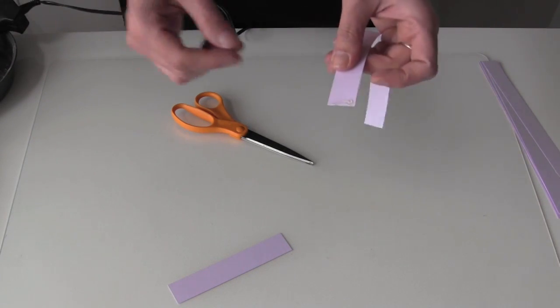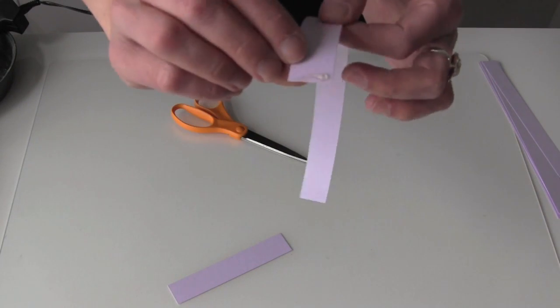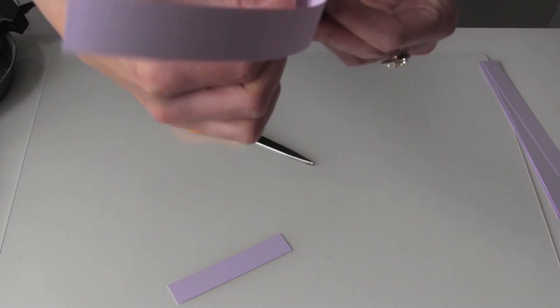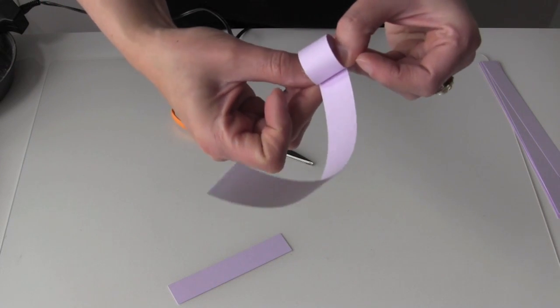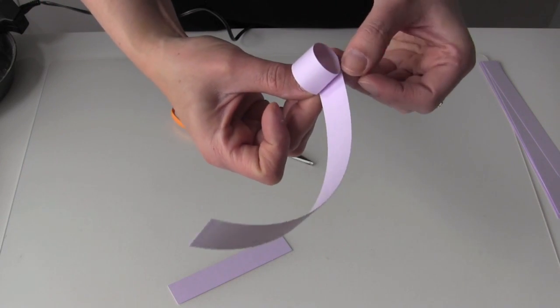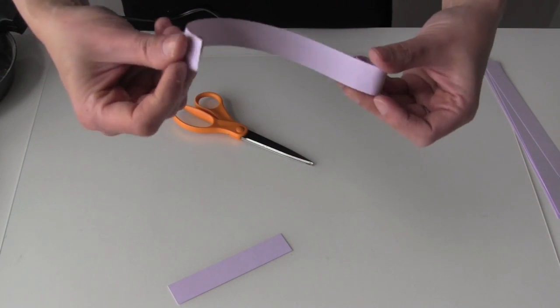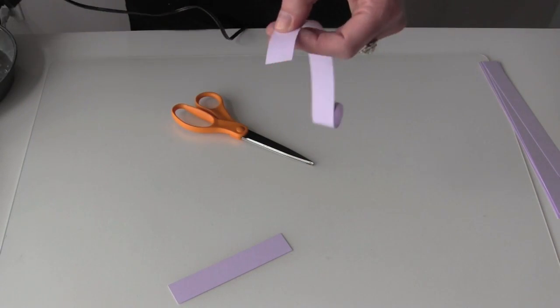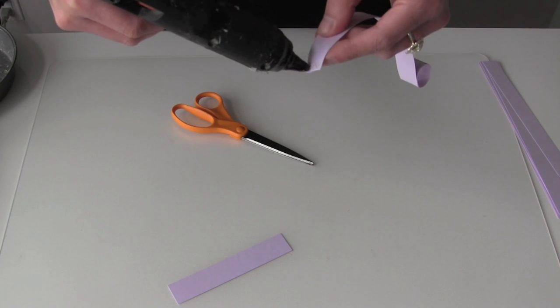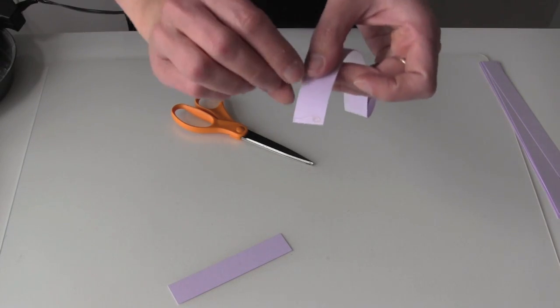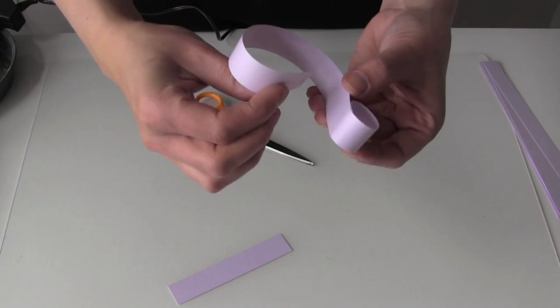This next one is going to be kind of like an S shape. So I'm going to curl it up and make a small loop there. And then I'm going to go the opposite way and make a bigger loop going in the opposite direction.